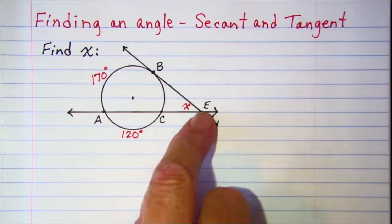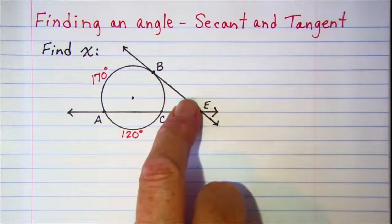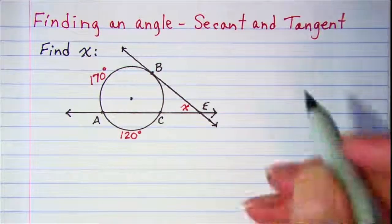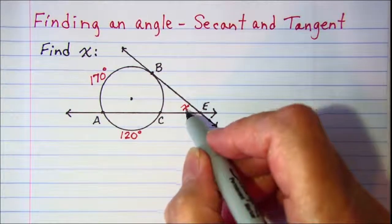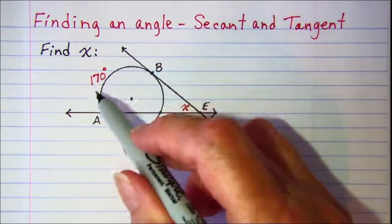They intersect at point E and the angle that we're interested in is x right here. Now we know from our theorem that the measure of the angle is equal to half the difference of the intercepted arcs.